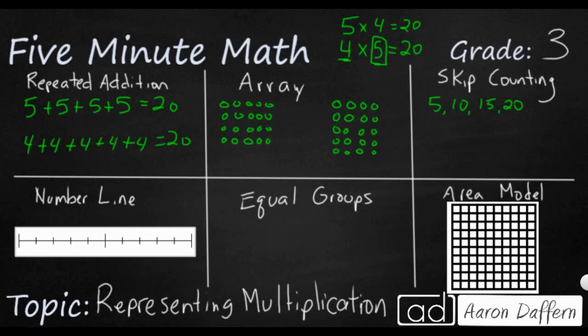So if I want to do four times five, I'm going to do five skips of four: 4, 8, 12, 16, and 20. As long as I end up at the same spot.